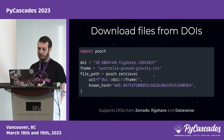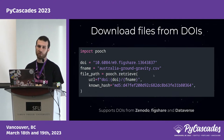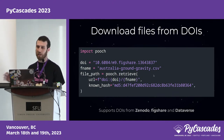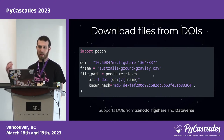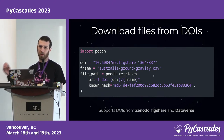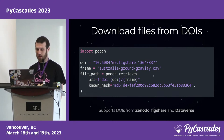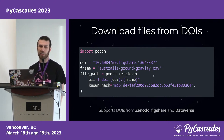Another neat thing we have is the ability to download files from services like Zenodo, Figshare, and Dataverse. They offer you the possibility to create repositories where you can store data, and they provide a DOI — a digital object identifier — for each repository. So by passing the DOI and the file name you want to download in the URL, it will download it.